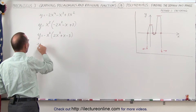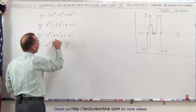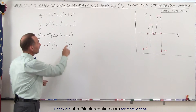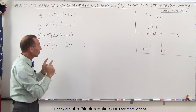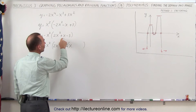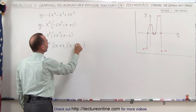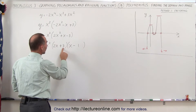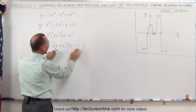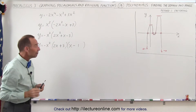This becomes y equals negative x squared times 2x squared plus x minus 3, which is easier to factor. Setting up two binomials: since we have 2x squared, we need 2x and x. For the signs, we need a positive and negative to get negative 3, using 3 and 1. Placing plus 3 and minus 1: 3 times x gives positive 3x, and minus 1 times 2x gives minus 2x; plus 3x minus 2x gives plus x for the middle term, and minus 1 times 3 gives negative 3. Those are the correct factors.